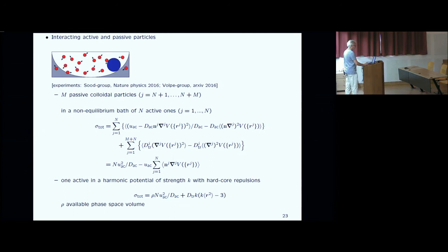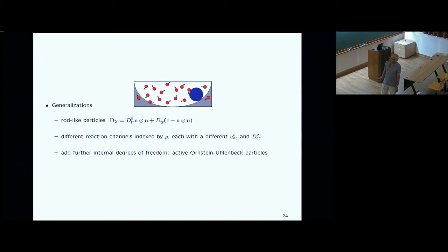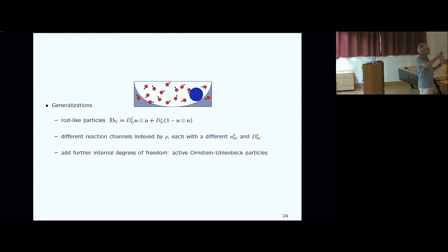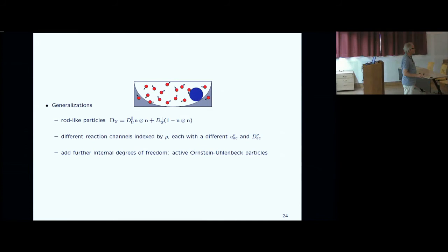This formalism can be applied to any kind of interacting passive and active particles, giving a unique form of the total entropy production. It can be further generalized to rod-like particles with anisotropic diffusion coefficient, different chemical reactions or channels indexed by rho each with their own mean velocity and dispersion, or additional internal degrees of freedom, within which you could model active Ornstein-Uhlenbeck processes, which are currently very much in vogue.